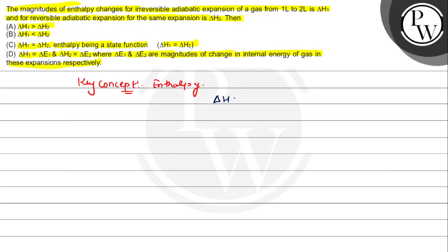So ΔH is equal to ΔE plus PΔV. You can see that for an adiabatic process, Q is equal to 0, then ΔH is equal to nCₚΔT.